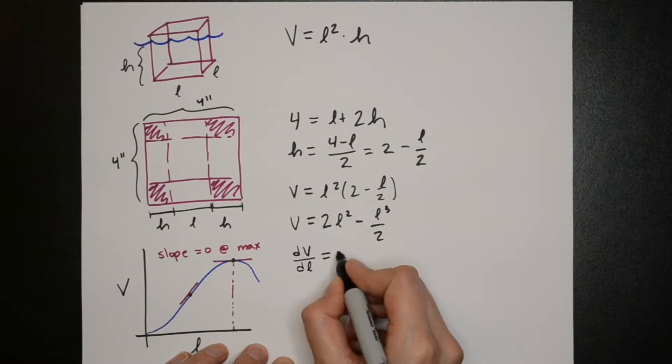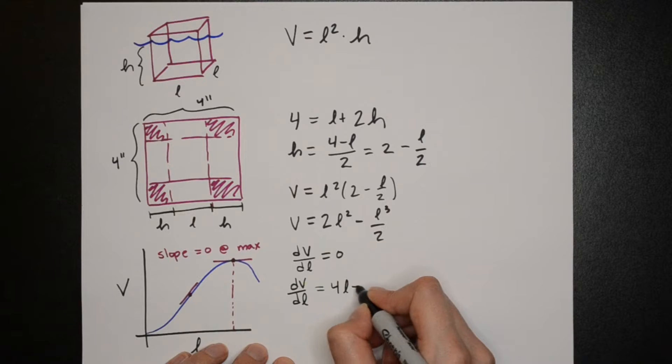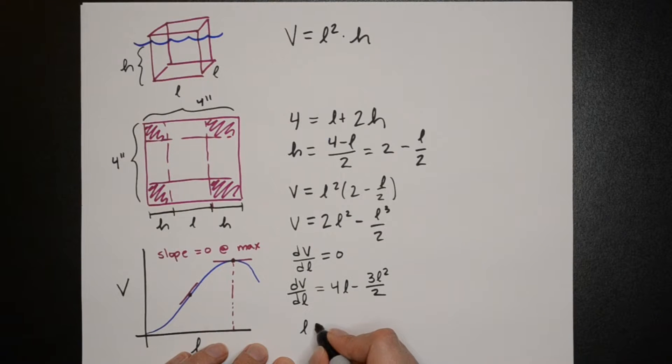If we take the derivative and set it equal to zero we can solve for length. We get two solutions: zero which is the null case which isn't interesting so we'll ignore it, and eight thirds.